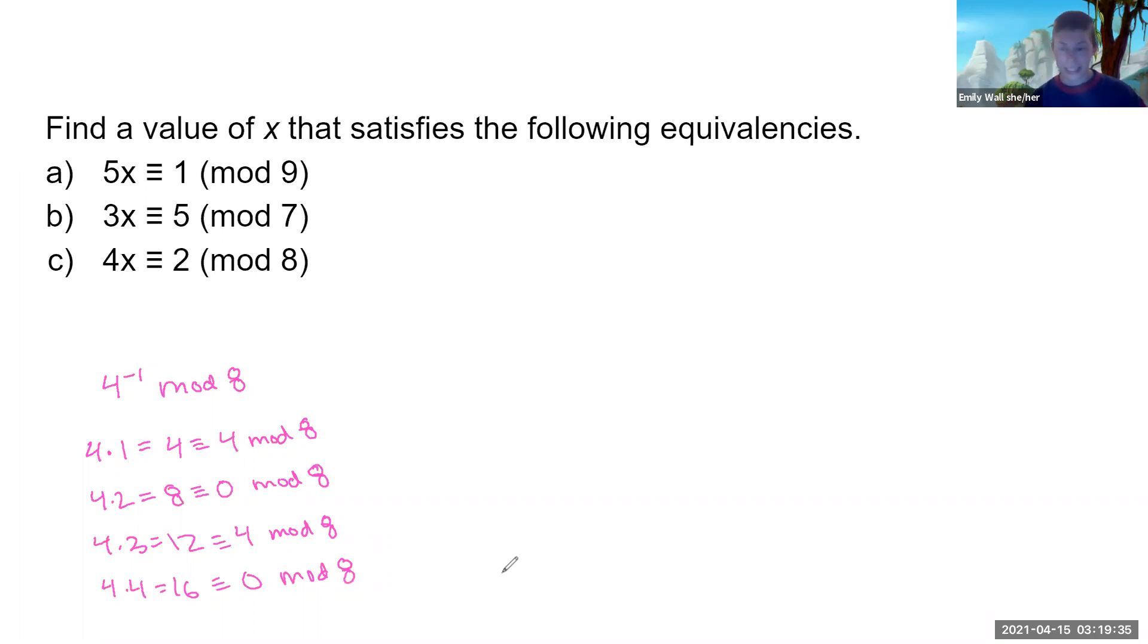So very unfortunately, this pattern will just keep repeating. Every number we multiply 4 by will either be 0 mod 8 or it will be 4 mod 8. We will never get to 1 mod 8. We will not get there. The inverse does not exist. Very tragic.